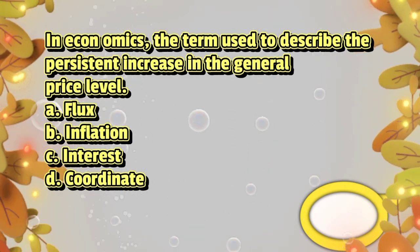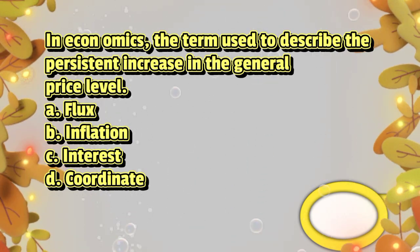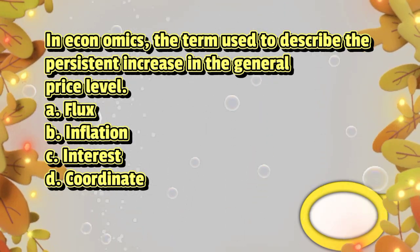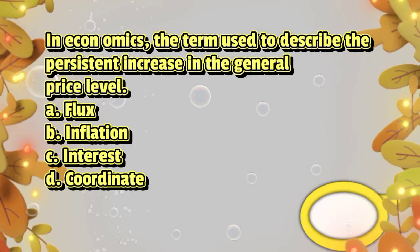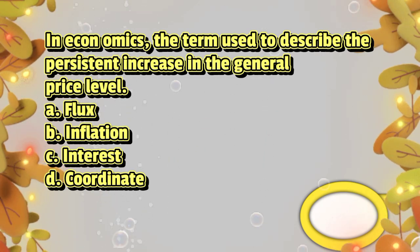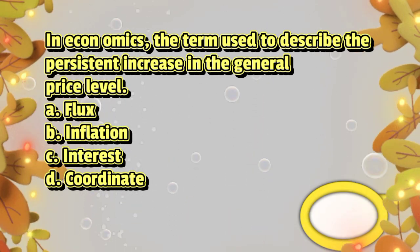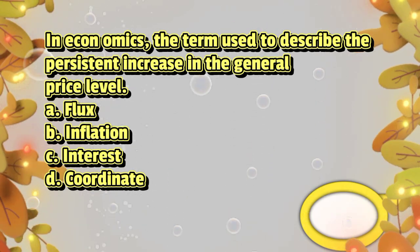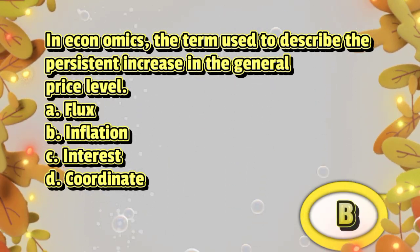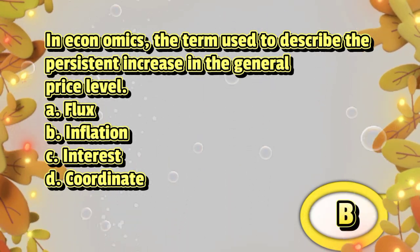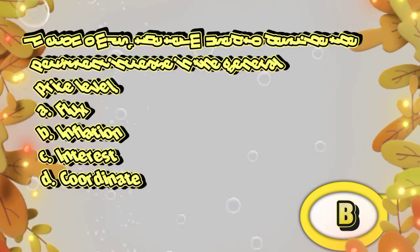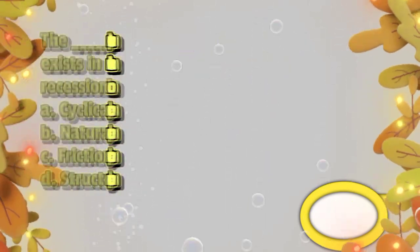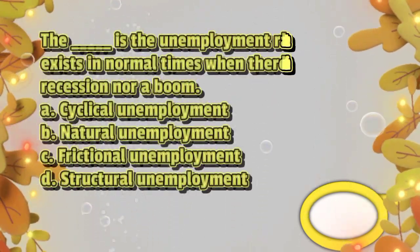In economics, the term used to describe the persistent increase in the general price level: A. flux, B. inflation, C. interest, D. coordinate. The answer is letter B.